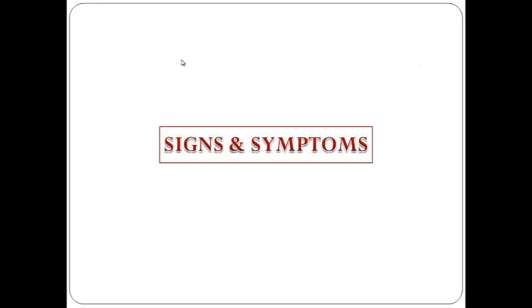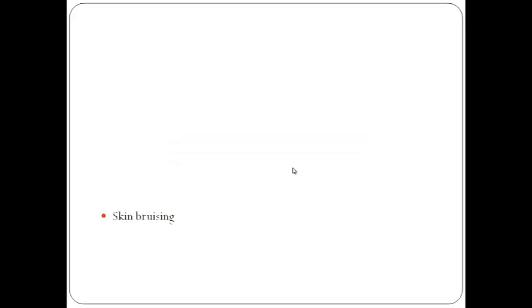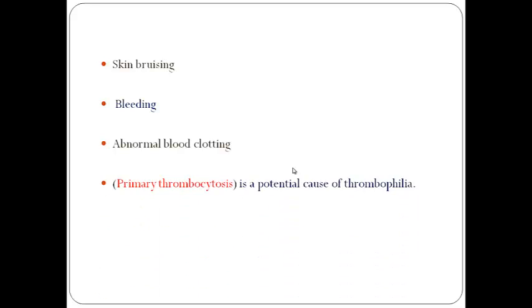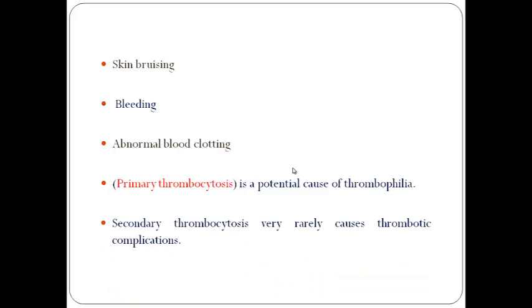Signs and symptoms of essential thrombocytosis: most patients do not experience any symptoms from an increased platelet count. When symptoms do appear, they can include skin bruising, bleeding from various sites such as the nose, mouth, gums, stomach, and intestinal tract. Abnormal blood clotting can also occur, leading to stroke, heart attack, and unusual clots in the blood vessels of the abdomen. Primary thrombocytosis is a potential cause of thrombophilia, while secondary thrombocytosis rarely causes thrombotic complications.